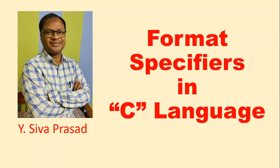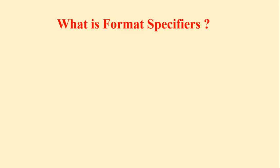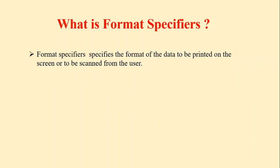Format specifiers in C language. What is a format specifier? In C language, a format specifier specifies the nature of the data to be represented — what type of data we are going to represent, whether in input or output. Format specifiers can be used in both printf and scanf. Printf is to print information on the screen, and scanf is to read data from the user.